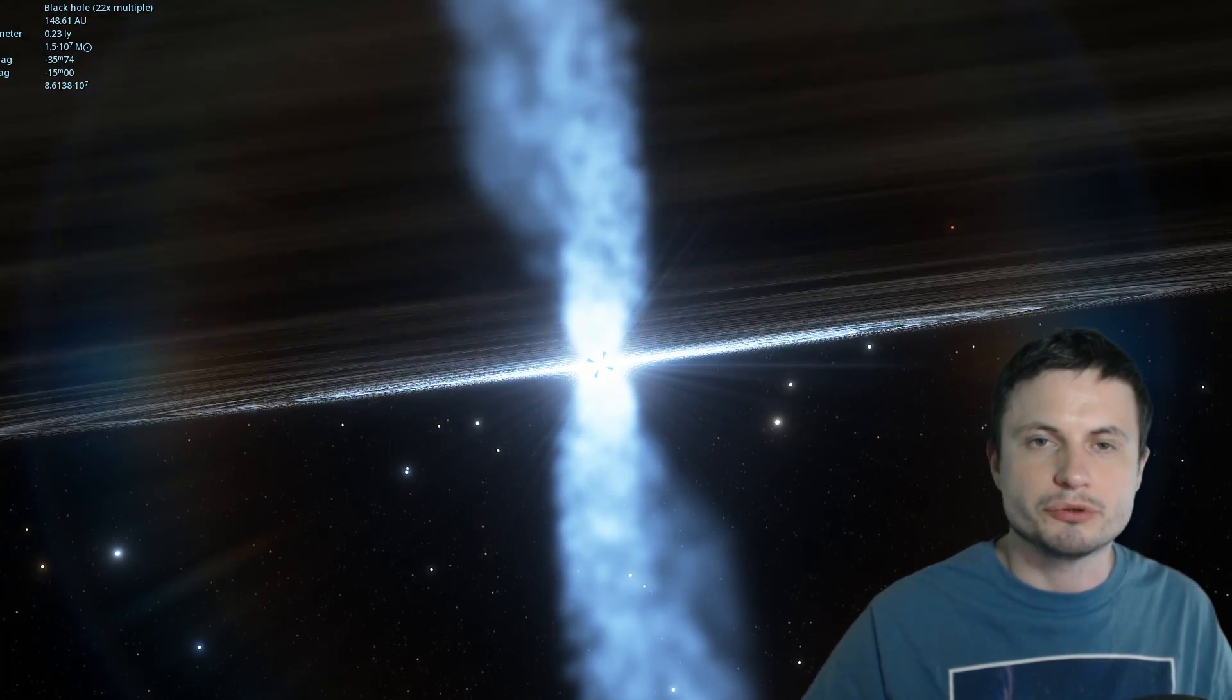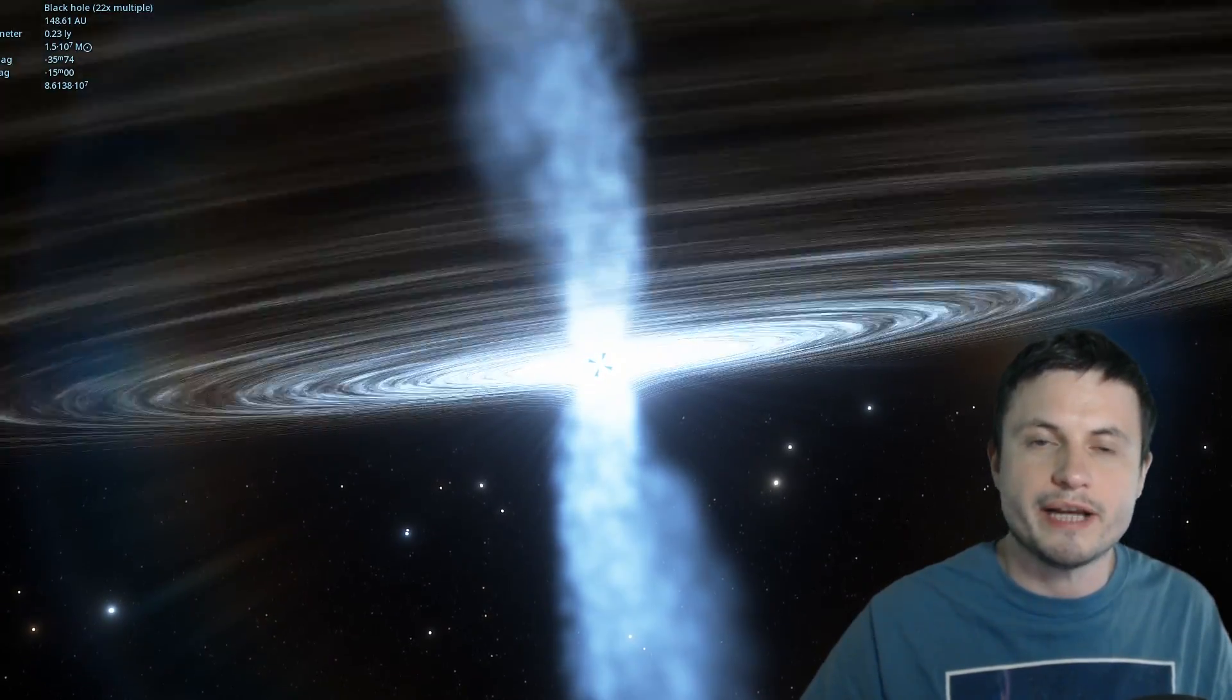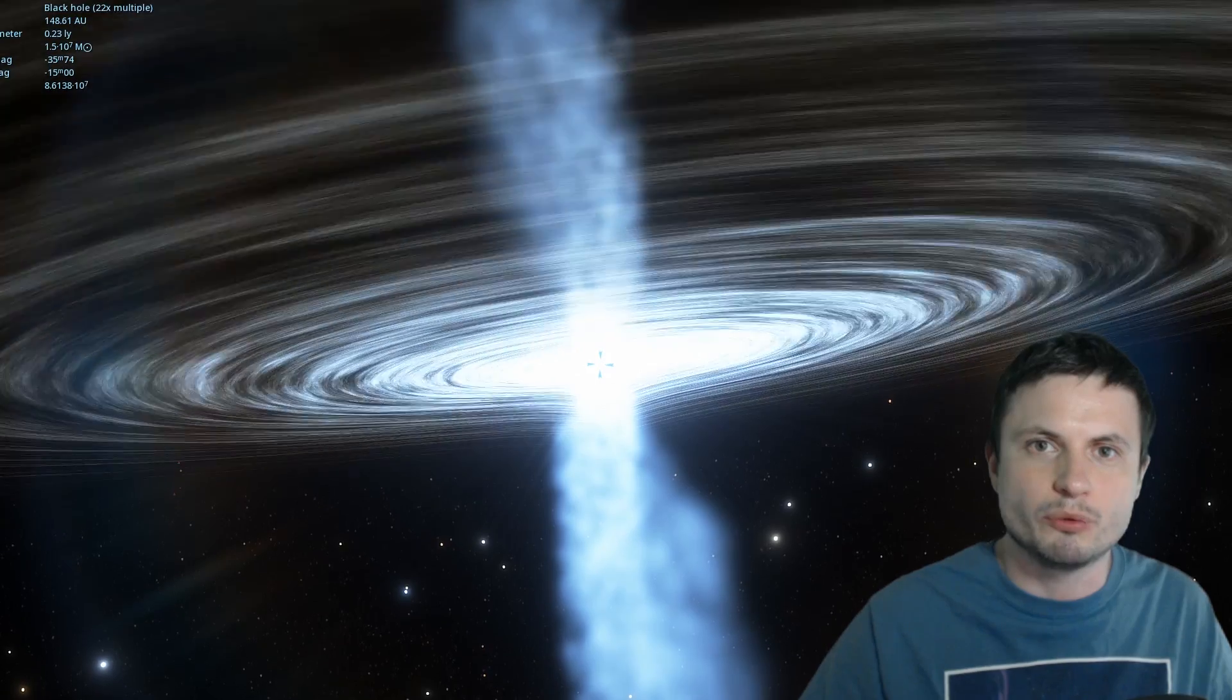But unlike other black holes, specifically ultra-massive black holes, this one is still growing, and it's growing really fast. This is maybe about four times more massive than the one in the middle of our own galaxy, but the main reason we call these galaxies CIFAR galaxies and not quasars is because in CIFAR galaxies, we actually also see the galactic shapes as well.